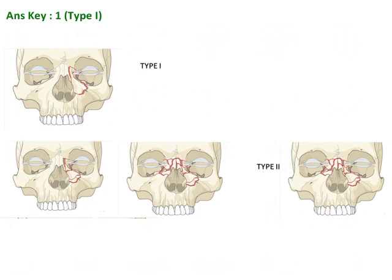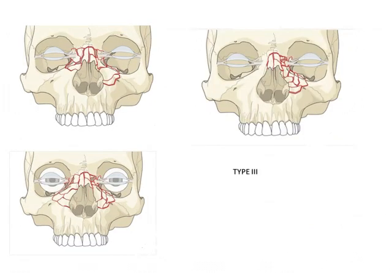Type 3 fractures have so many fragments that reduction is impossible. The canthal ligament has been displaced and has lost its attachment to the bone, so the first priority is to reattach the medial canthal ligament to the bone. The prognosis is less favorable due to significant bone loss, often requiring bone grafts to reconstruct the orbital floor or the fractured area.